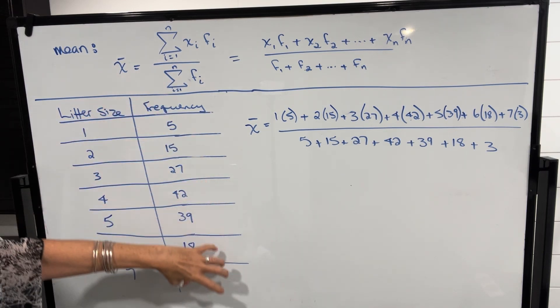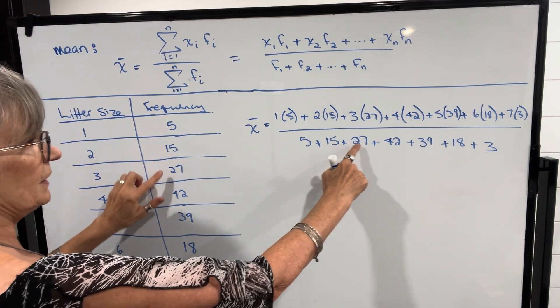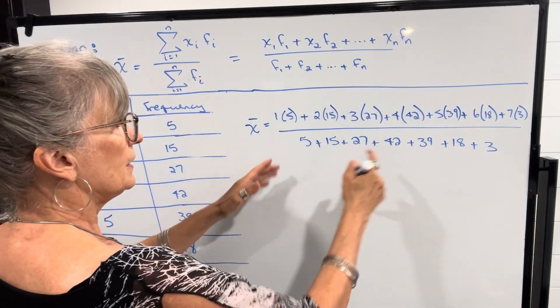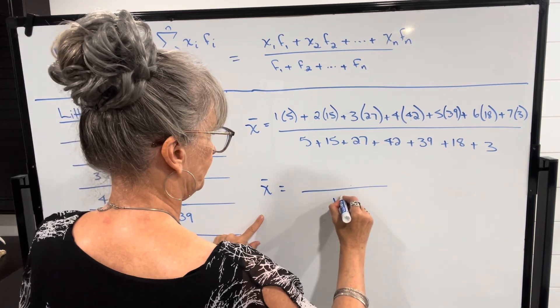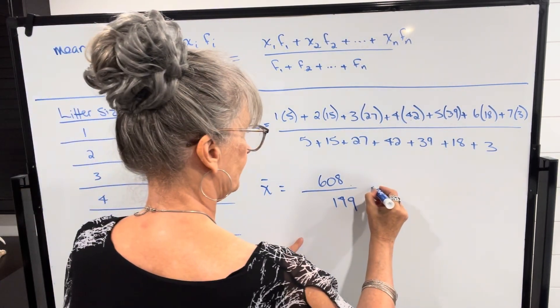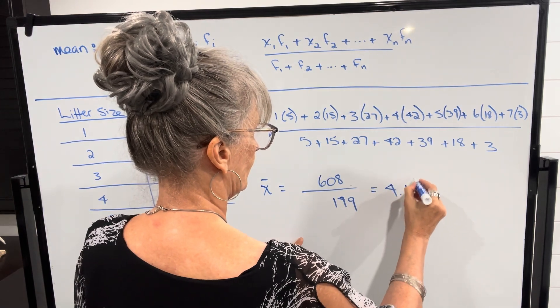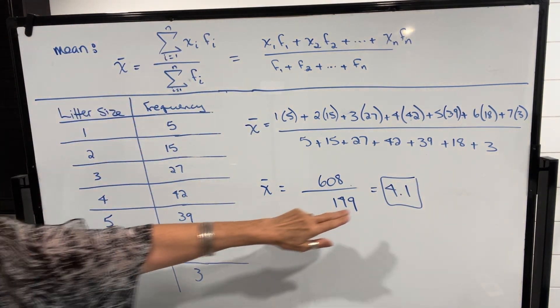And in the denominator, I add up all the frequencies. Be careful, it's the frequencies you add up, it's not the litter size. So 5 plus 15 plus 27 and so on, and that should work out to be 149. The numerator is 608. So the mean for this set of data would be 4.1.